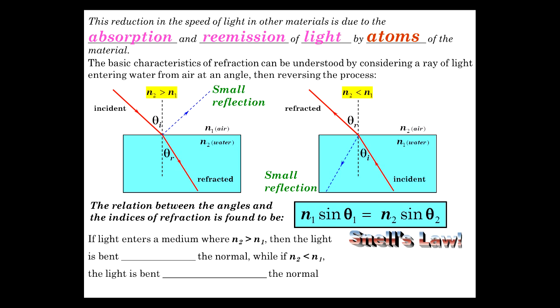If light enters a medium where N2 is greater than N1, like in this case, then the light is bent toward the normal. In the other case, if N2 is less than N1, then the light is bent away from the normal. And that's the essential character of the refraction of light between two different media.